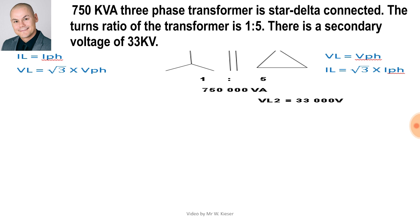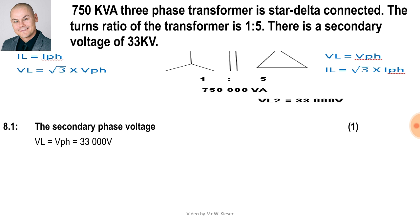This question reads: a 750 kVA three-phase transformer is star-delta connected. The turns ratio of the transformer is 1 to 5. There is a secondary voltage of 33 kilovolts. Remember, kVA represents the symbol S, which is the rating of the transformer. The ratio tells us this is a step-up transformer. The secondary voltage is the line voltage, and since the secondary side is delta connected, VL2 equals V phase two — so the secondary phase voltage is 33,000 volts.